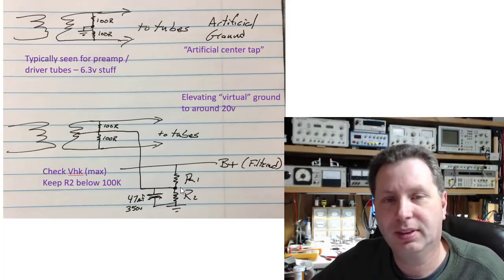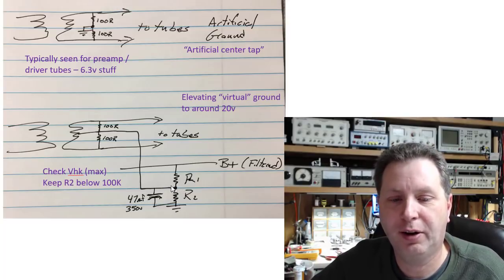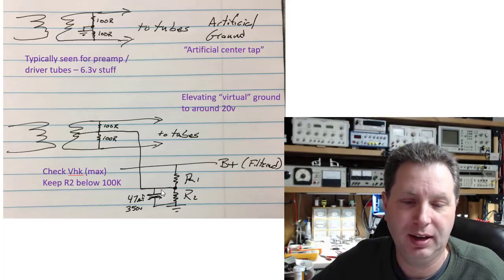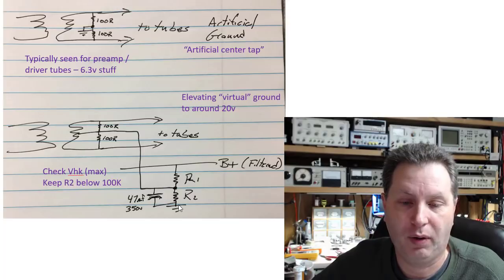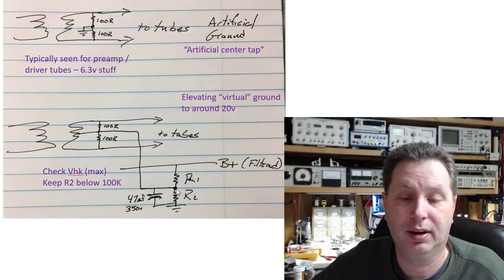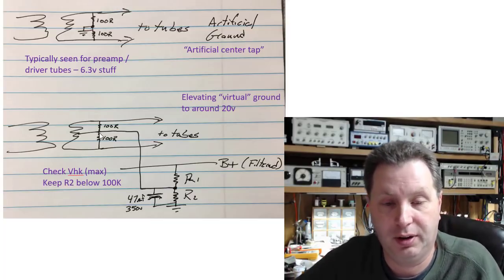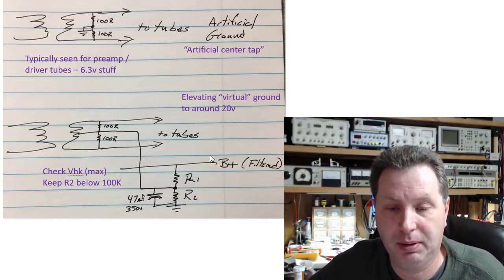And then the other thing I typically see done here is a pretty high-grade capacitor, typically 47 microfarad, strapped between it and ground. And that's just to give a little rectification and smoothing of this center voltage here, even coming off the B+.